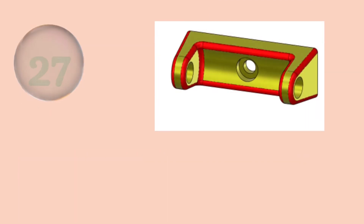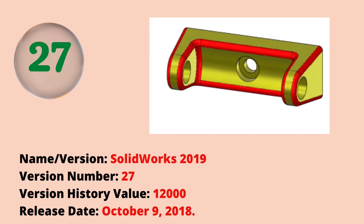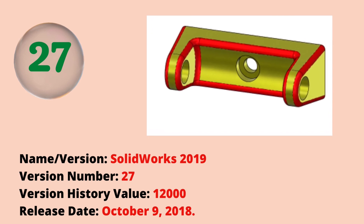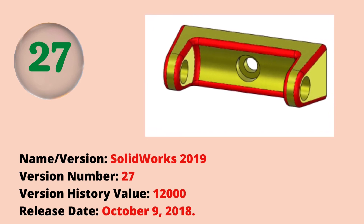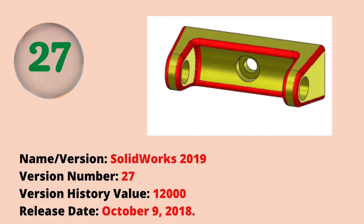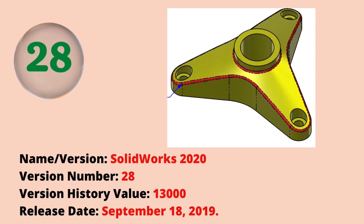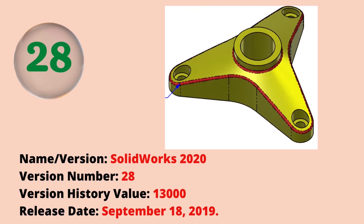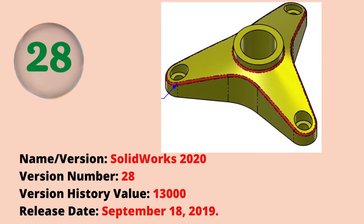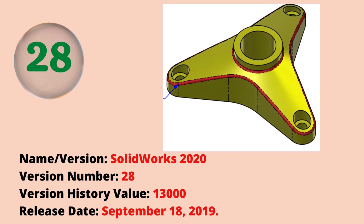The twenty-seventh version was SOLIDWORKS 2019 with a version history value of 12,000. The twenty-eighth version was SOLIDWORKS 2020 with a version history value of 13,000. The release date was September 18, 2019.